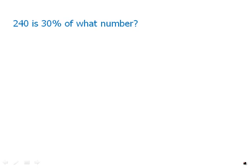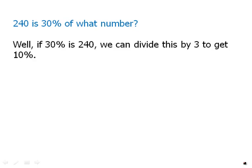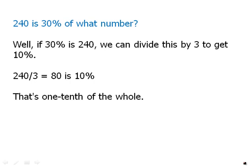240 is 30% of what number? Well, here's how I'd think about it. If 30% is 240, we can divide this by 3 to get 10%. So 240 divided by 3 is 80, that's 10%. Well, clearly, if that's one tenth, then the whole thing should be 800.